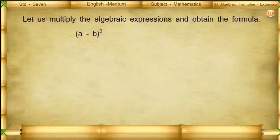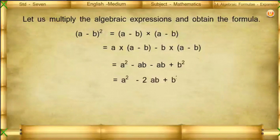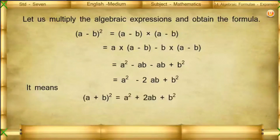Let us multiply the algebraic expressions and obtain the formula. (a − b)² = (a − b)(a − b) = a(a − b) − b(a − b) = a² − ab − ab + b² = a² − 2ab + b². So, to summarize: (a + b)² = a² + 2ab + b², and (a − b)² = a² − 2ab + b².